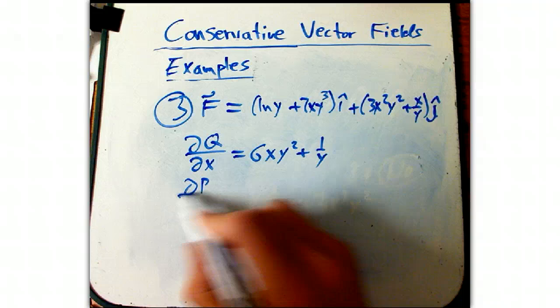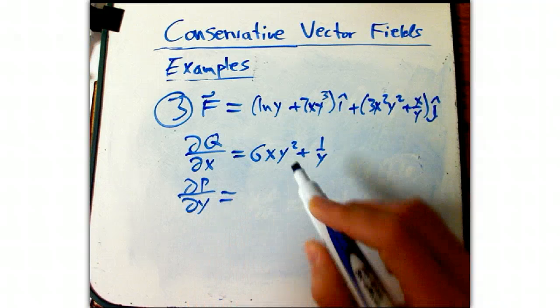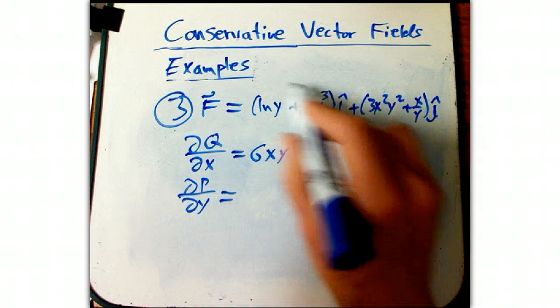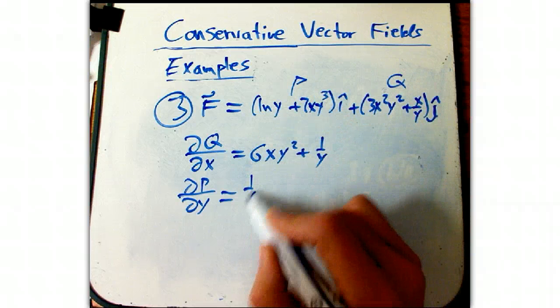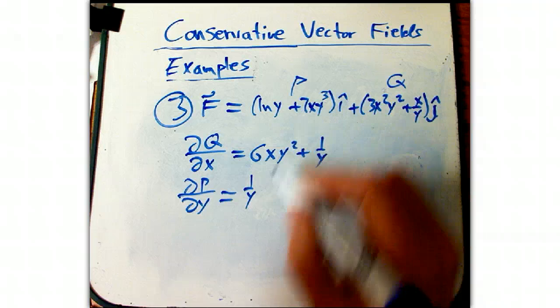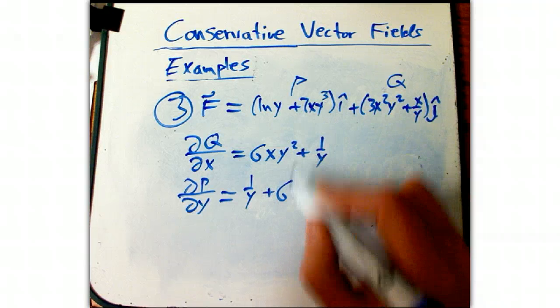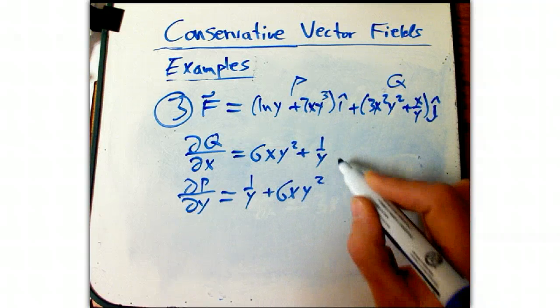And dP/dy. Back on track here. dP/dy. This is p. This is q. That's 1 over y. And then plus 6xy squared.